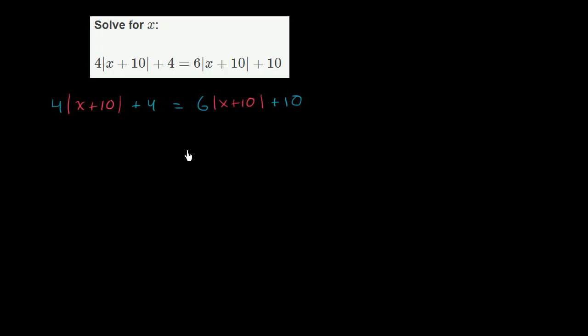Let's get all of the absolute values of x plus 10 on the left-hand side. So I want to get rid of the 6 times the absolute value of x plus 10 on the right. I could subtract 6 times the absolute value of x plus 10 from the right. But we've seen this multiple times. If these two things are equal and I want to keep them equal, if I subtract 6 times the absolute value of x plus 10 from the right-hand side, I have to subtract the same thing from the left-hand side. So we're going to have minus 6 times the absolute value of x plus 10.